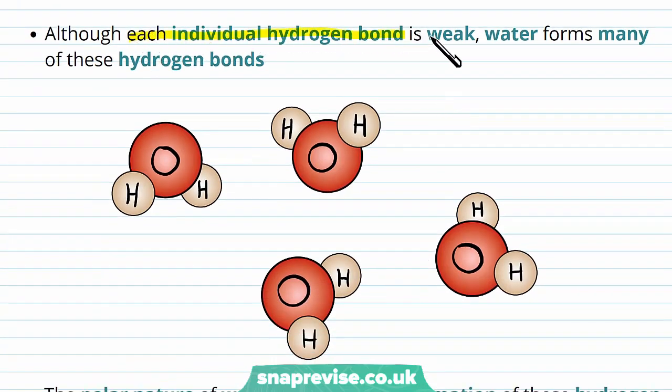Each of the individual hydrogen bonds are weak, but water forms lots of these hydrogen bonds with lots of its neighbors. Overall, it forms a nice strong connection. This is how water connects together as a liquid. For example, if we were to label these, we could have a bond between this hydrogen and this oxygen, we could have one between this hydrogen and this oxygen, this one and this one.